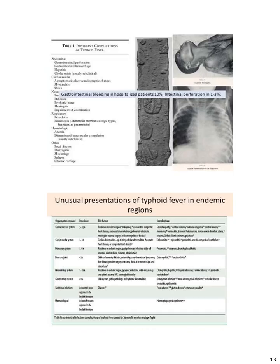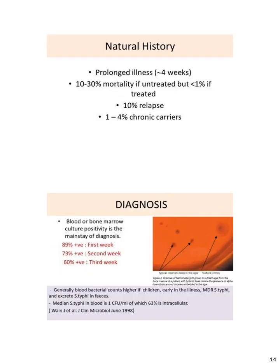Unusually presenting diseases are also common in typhoid fever in endemic regions. Illness is seen for about 4 weeks, with 10-20% mortality if untreated, 10% relapse, and 1-4% chronic carriers. Blood or bone marrow culture positive is the mainstay of diagnosis.